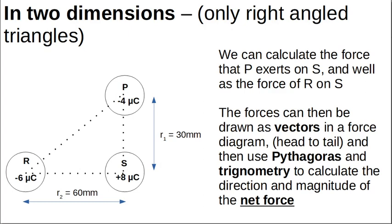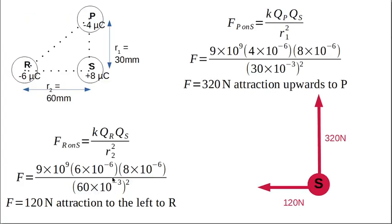So what happens here? You can look at this from any of these things, but they usually ask you for this corner of the triangle, the one at the right angle corner. So if they want you to find what happens to S, you can work out the force of R on S and the force of P on S, and then you can end up drawing a vector diagram from that. So let's go ahead and have a look at how this works.